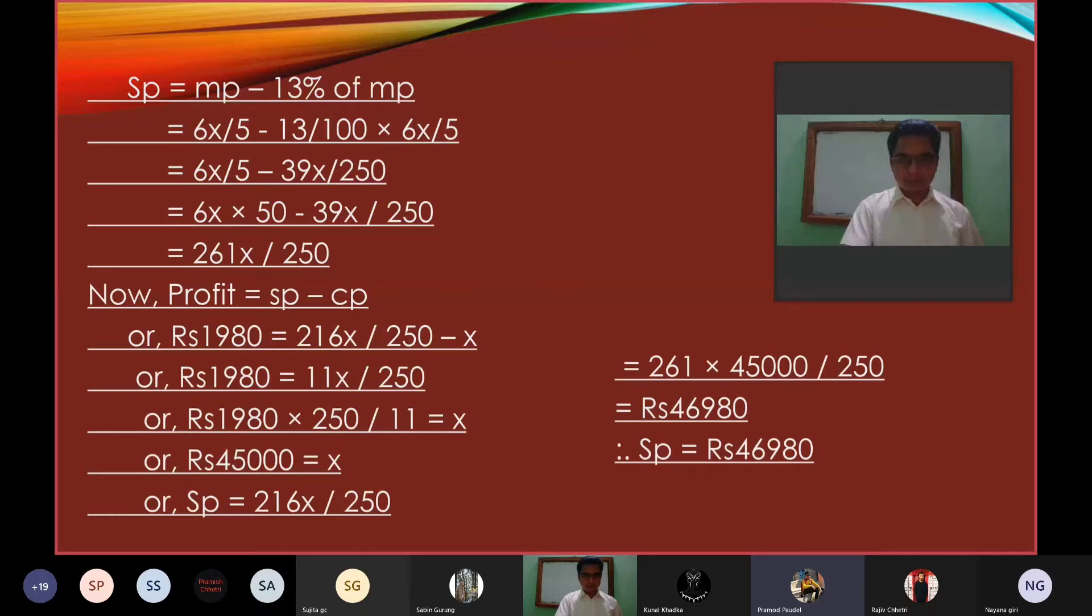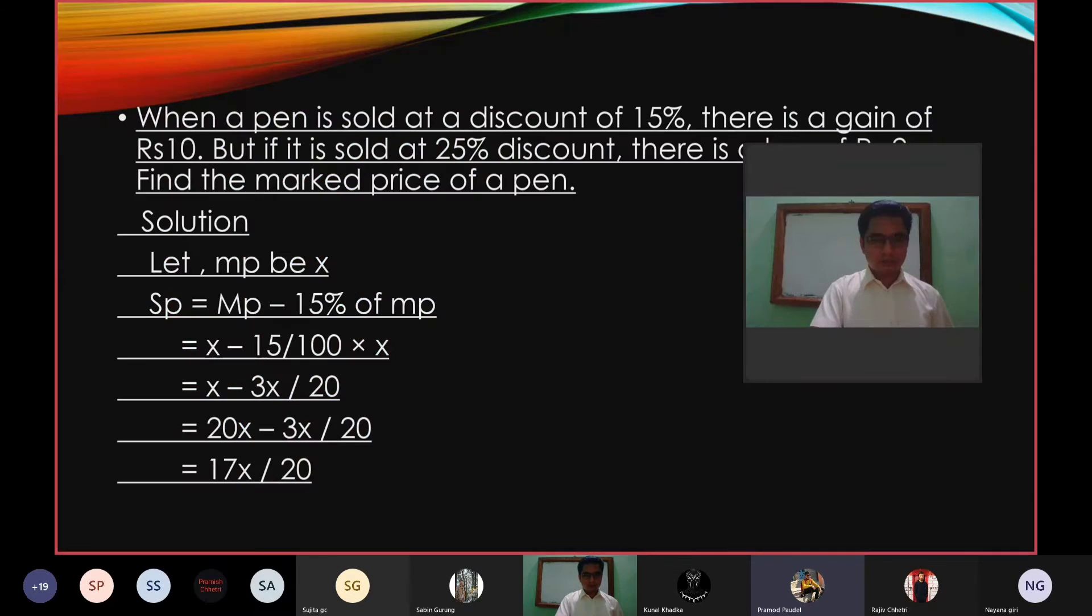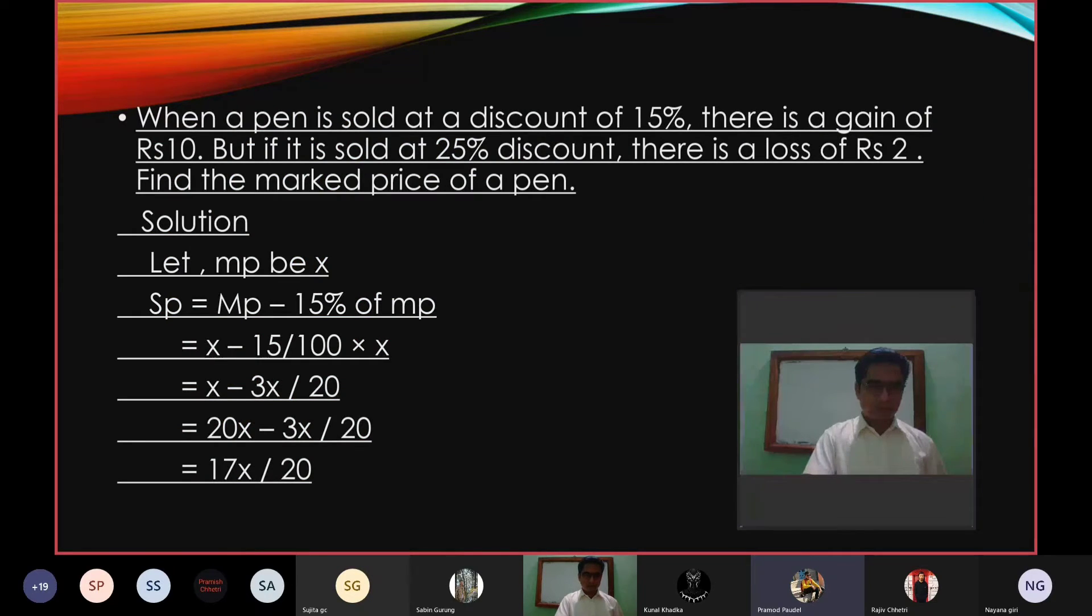When a pen is sold at a discount of 15%, there is a gain of Rs 10. But if it is sold at 25% discount, there is a loss of Rs 2. Find the marked price of the pen.